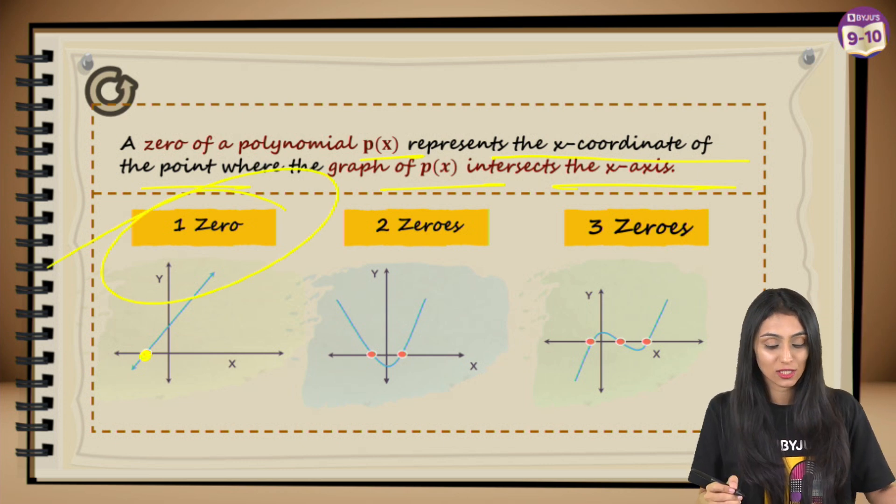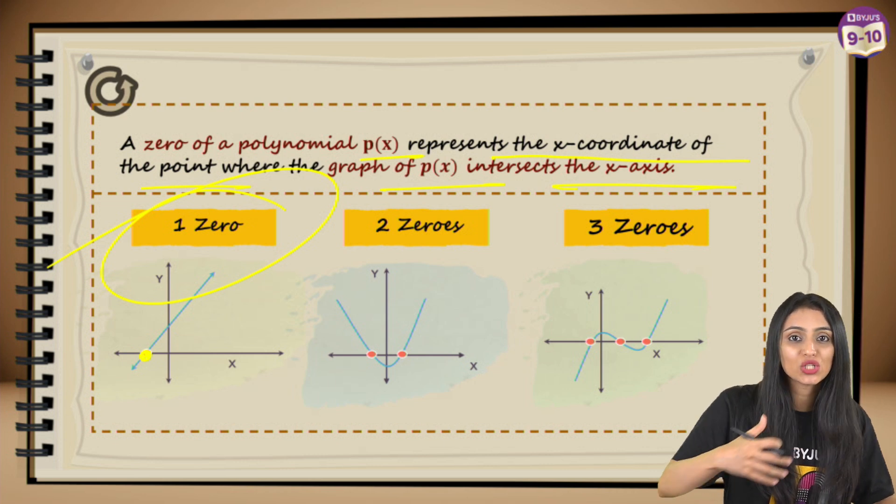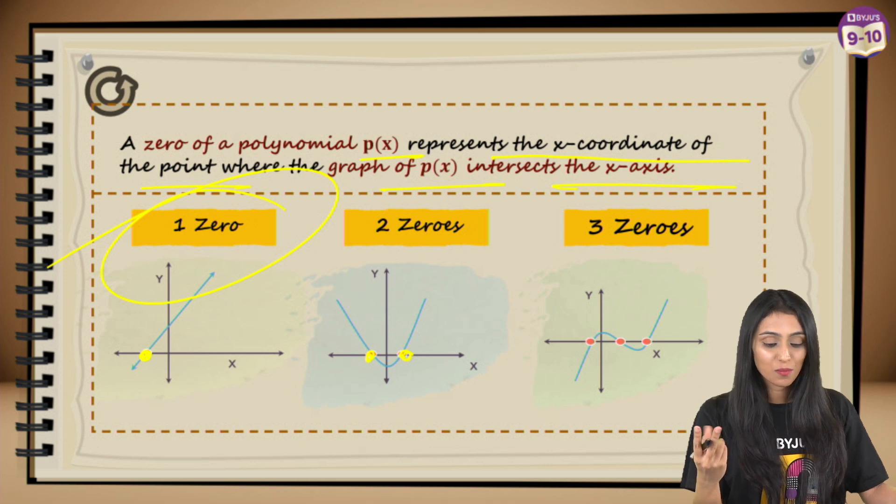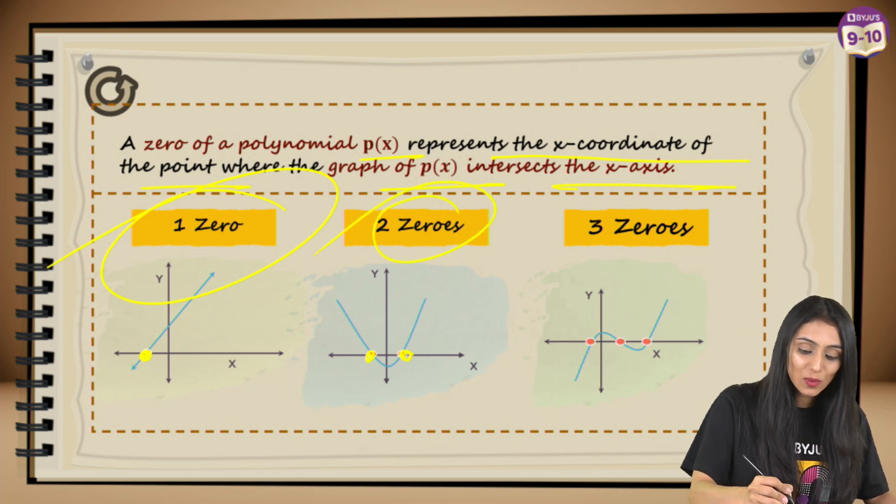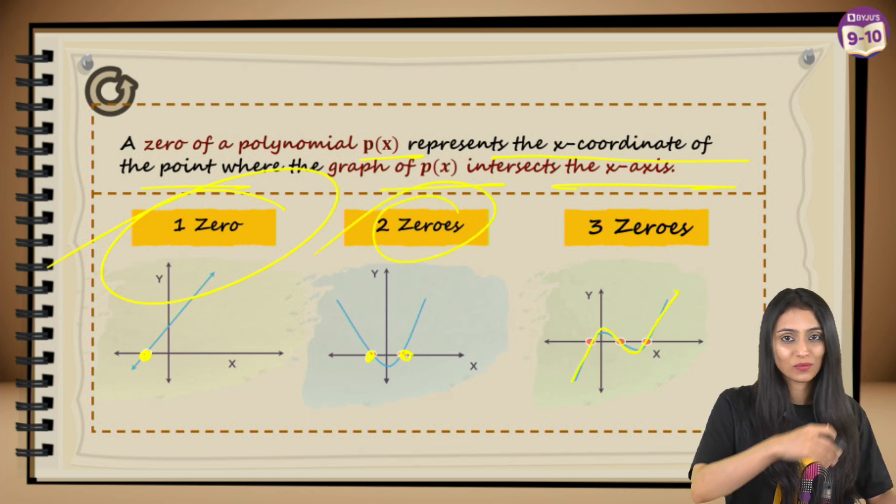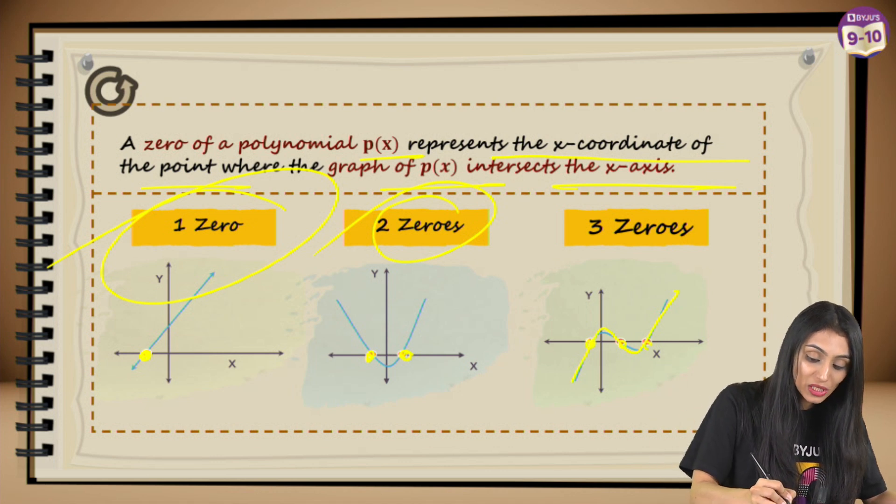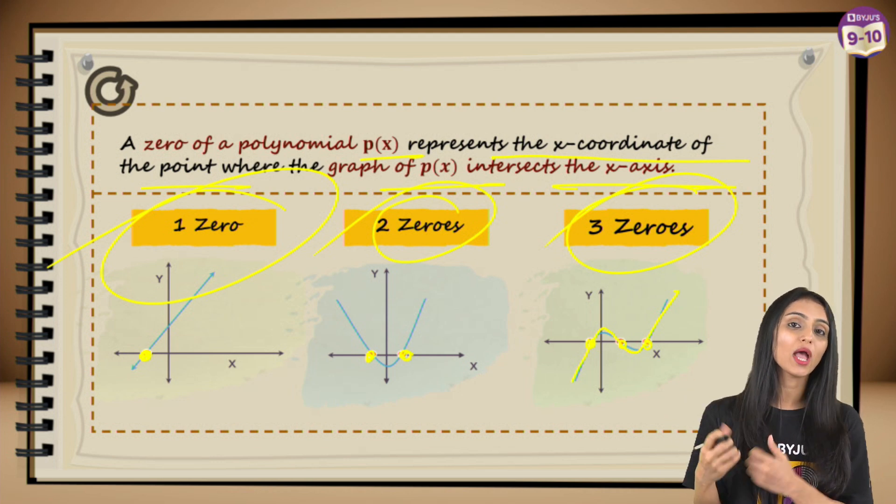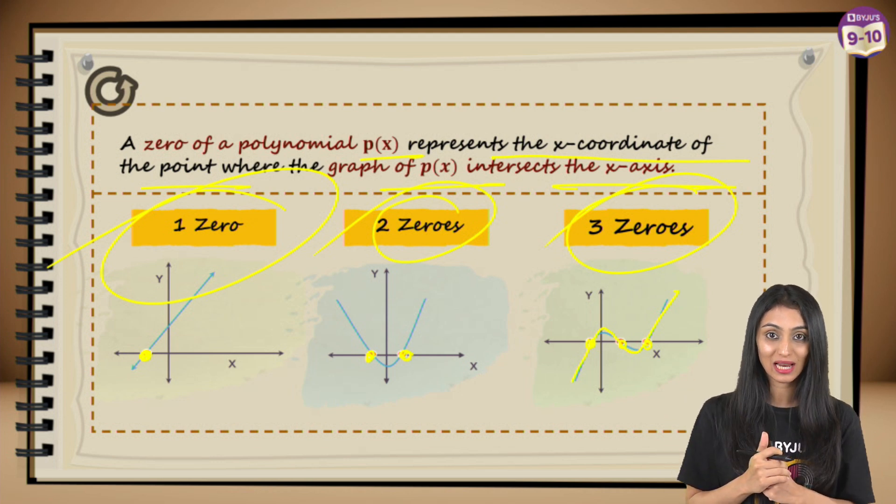Look at the first one - this is a linear graph. The straight line is intersecting the x-axis at only one point, so this has got only one zero. Here you can see it's a U-shaped graph, it's a parabola intersecting the x-axis at two distinct points, so it has got two zeros. Here it's a curvy graph intersecting x-axis at three points, that means this has got three zeros. So just by looking at the graph we can tell how many zeros a polynomial has.